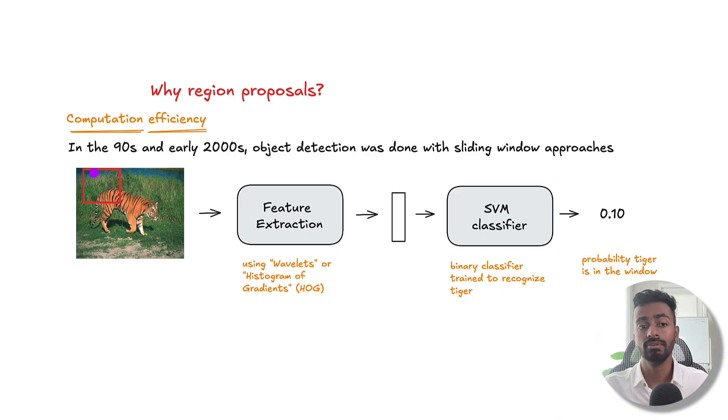And then what we would do is slide this window by a pixel or two, and then repeat the process of feature extraction, maybe feature selection in the middle, and then SVM classification, and then keep doing this sliding in the window pixel by pixel throughout the image until the entire image is covered.